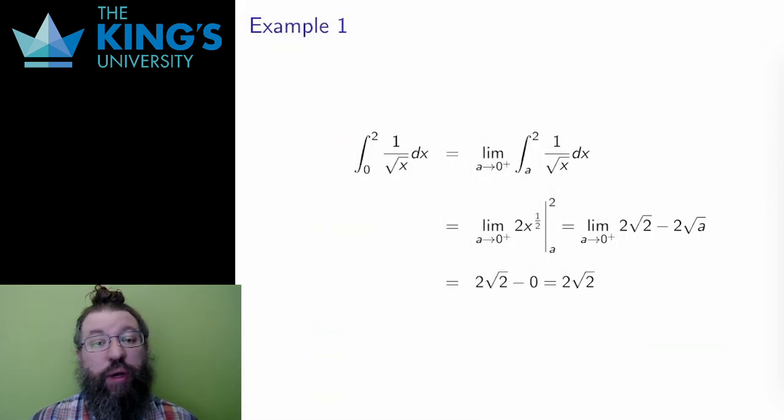So say I want to integrate the square root of x from 0 to 2. Most of this domain is fine, but there is a vertical asymptote at x equals 0.